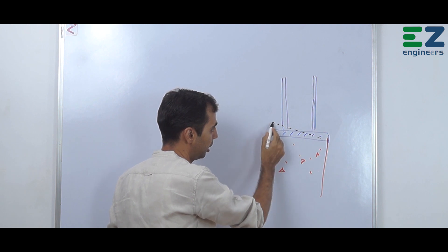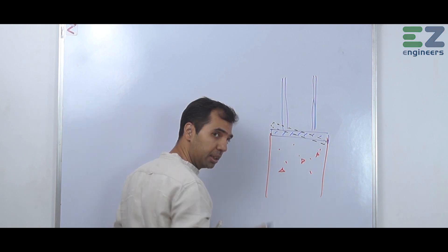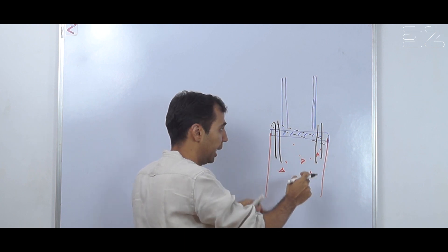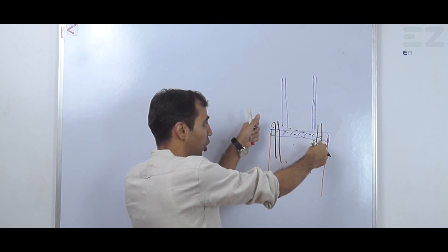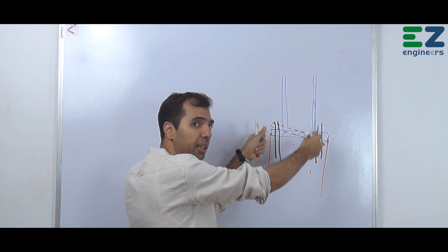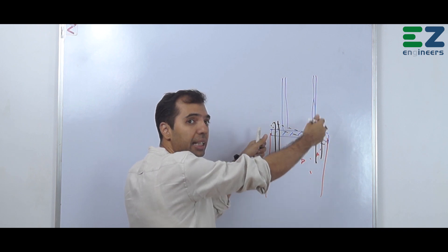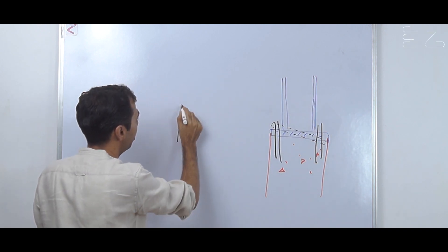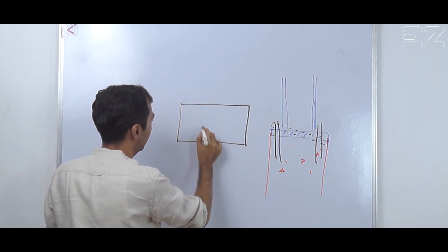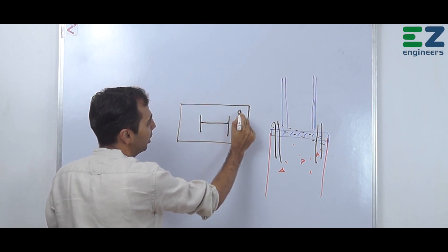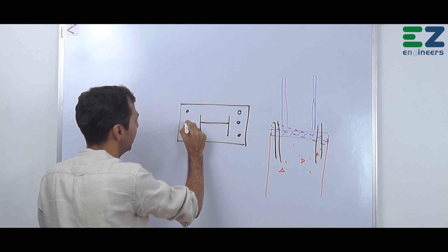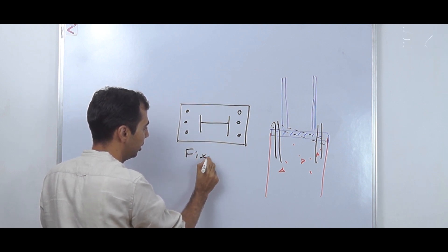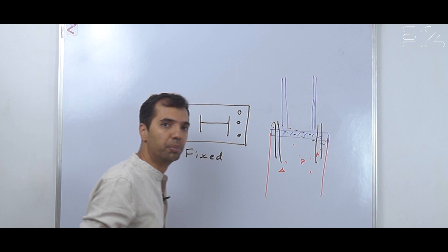This can rotate like this. When I put anchor bolts like this, this plate cannot rotate, and it will be fixed. So if I draw the plan of this, the plan will be something like this — this is a fixed column.